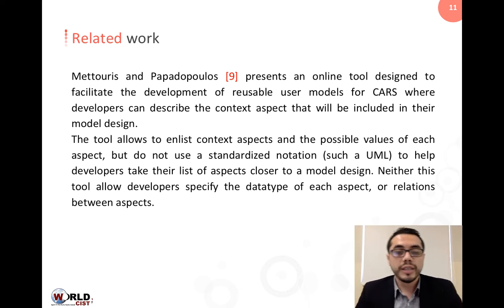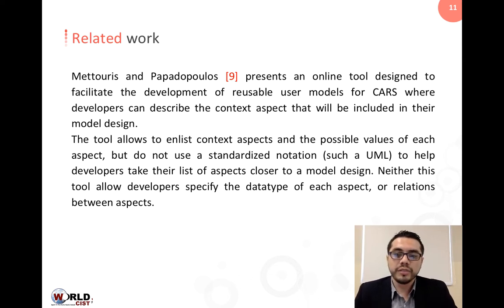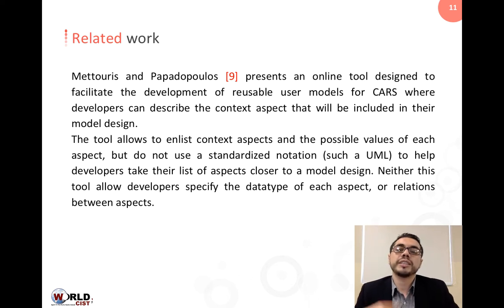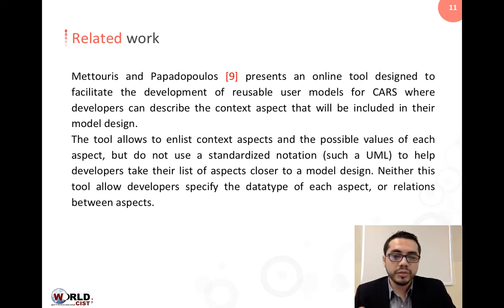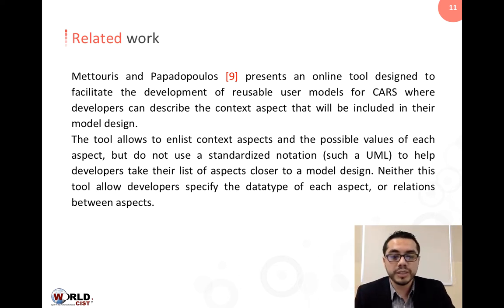Another tool is an online tool designed to facilitate the creation of data models for context-aware recommender systems, helping developers design their own data models. Developers can describe the list of aspects they want to include in the future model design. However, this tool does not use any standardized notation to help developers move this list closer to a design or implementation.